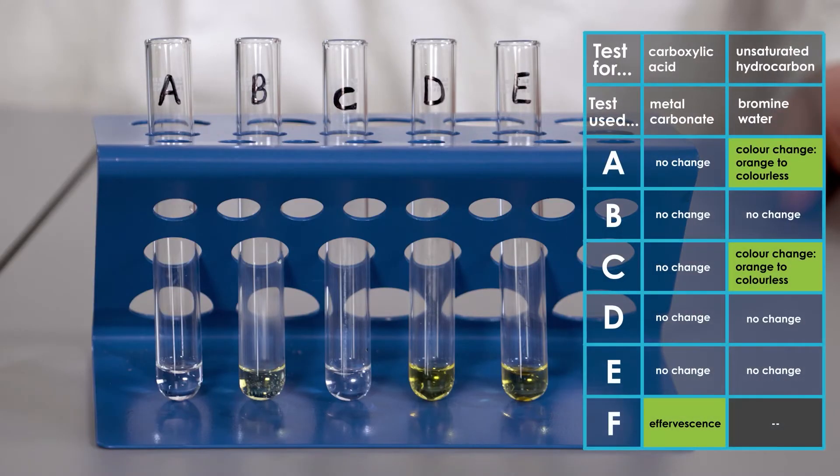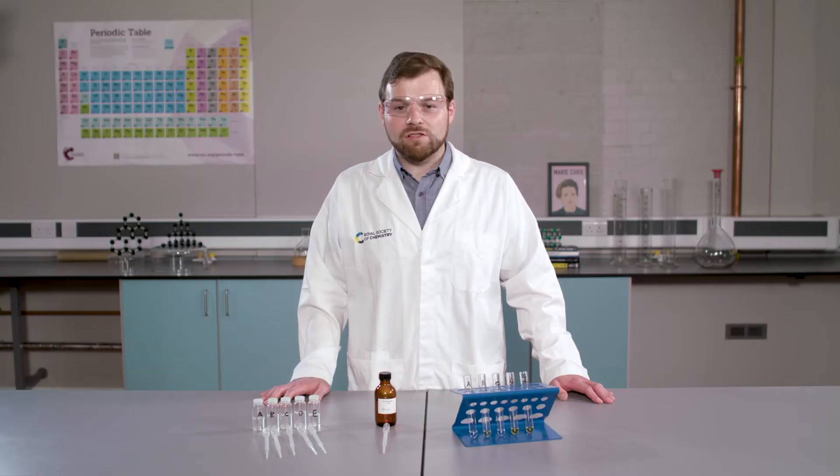You can see we have a positive result for samples A and C. You might be surprised by that result if you are expecting one positive result confirming the presence of the double bond. At this stage, I can't identify the unsaturated hydrocarbon, as clearly other functional groups also give a positive result. This shows the importance of completing the tests on all of the unidentified samples. When carrying out an investigation like this, you may get unexpected results, meaning you need to go back and adapt your original plan. Be prepared to be flexible.